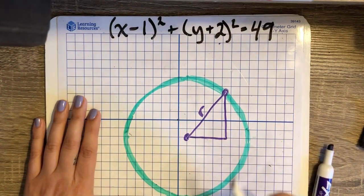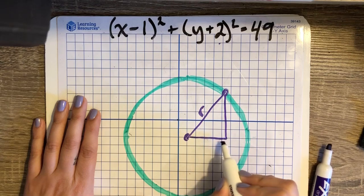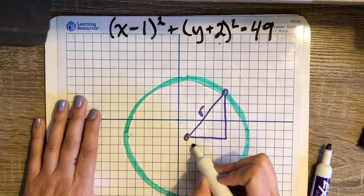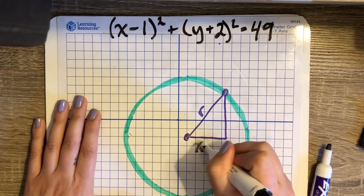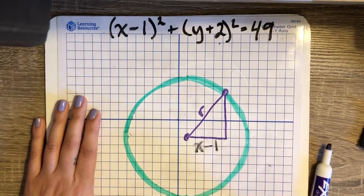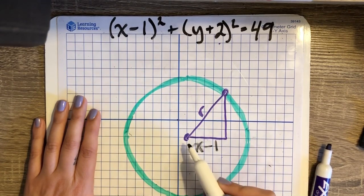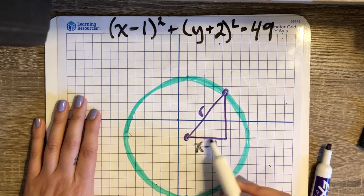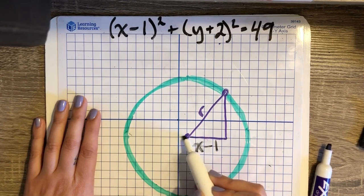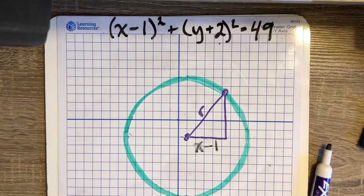So this distance here, the horizontal distance of my right triangle, is x minus h, which in this case is 1. So instead of having the entire x value, I have to subtract away that little piece here because I moved the center of the triangle over 1.